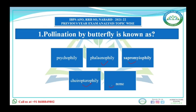Now the question is asked regarding the specific insects involved in pollination. If you talk about the bee, the pollination done by bee is known as melitophily. Pollination done by moth is phalenophily. Sapromyophily is pollination done by fly.